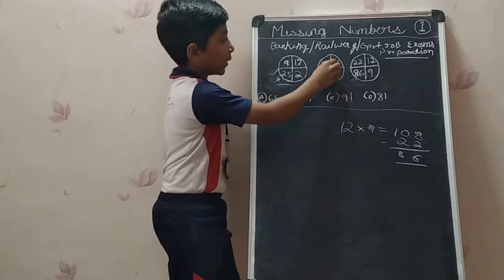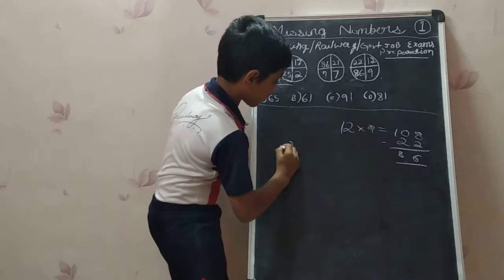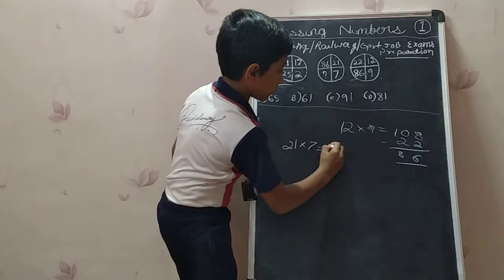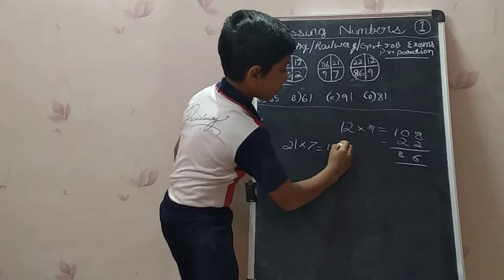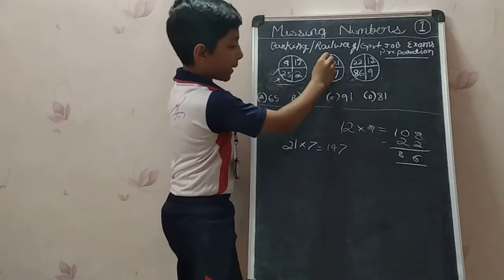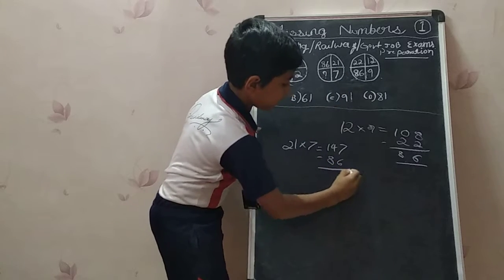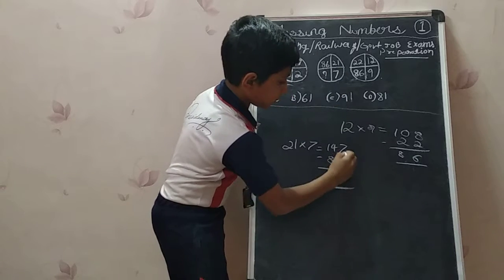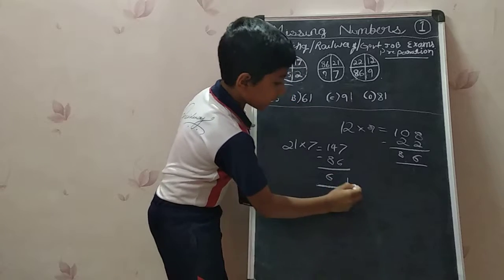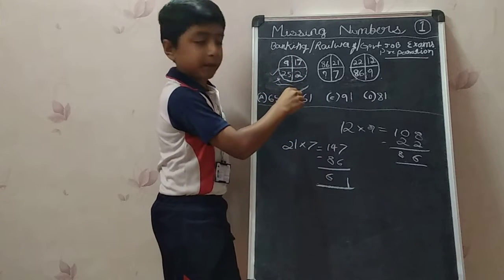Let us try the same logic here. 21 into 7 equals 147, minus 86 equals 161. So B is the right answer.